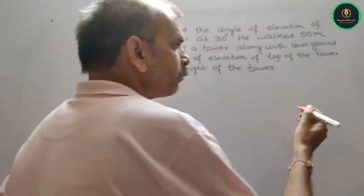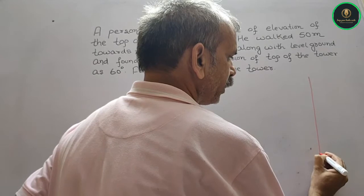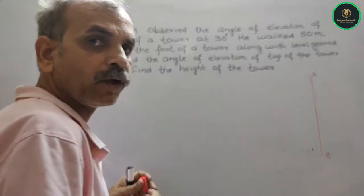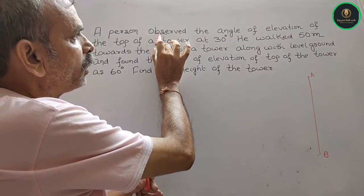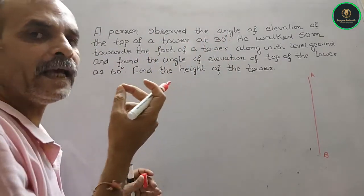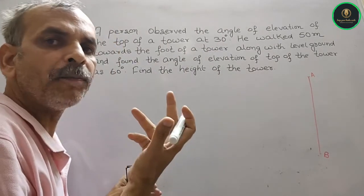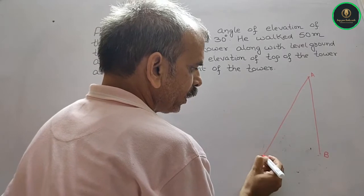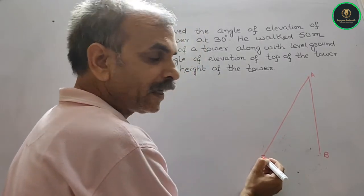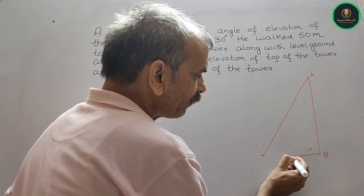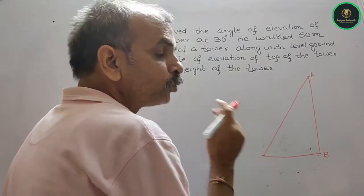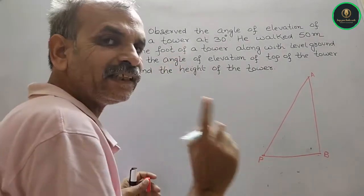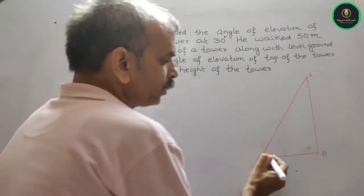Suppose this is your A and B. This is the observer, that means a person, and this is our level ground. Now suppose the person is at point P. The first angle is 30 degrees, so this is your 30 degree angle.